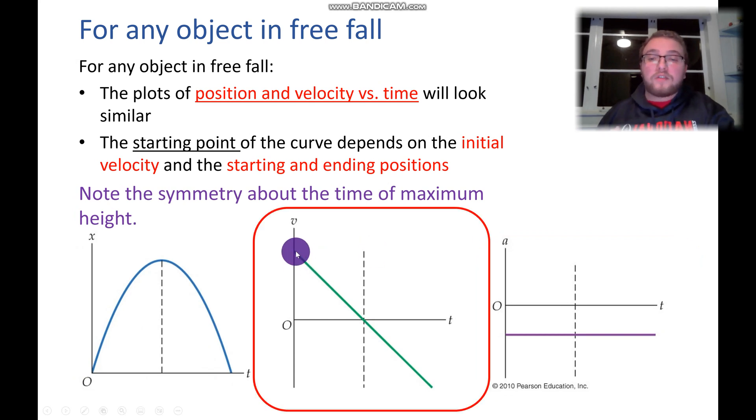Our velocity starts high up at our initial velocity, v naught. We know it's positive. And then gravity slowly yet consistently eats away that velocity until we reach our maximum height. Our maximum height is where our velocity is zero.